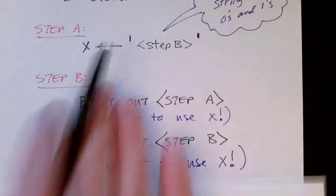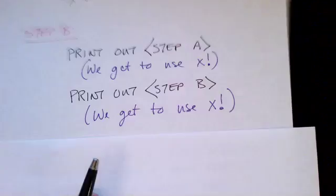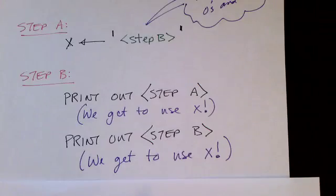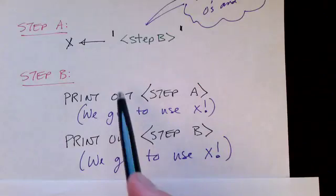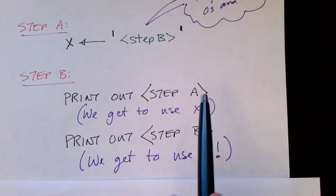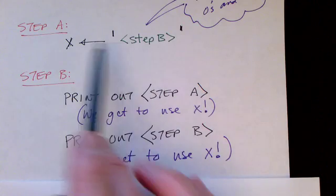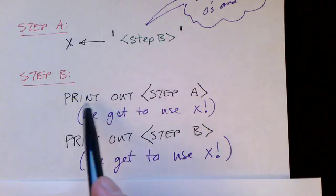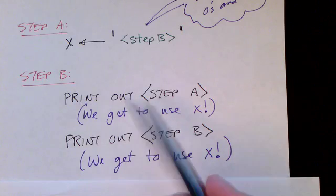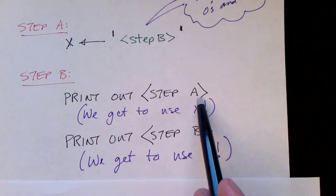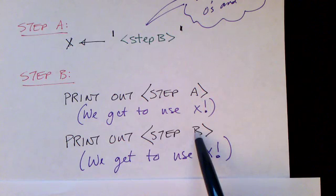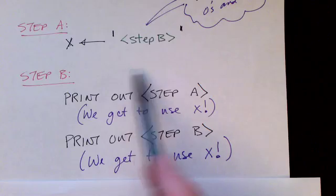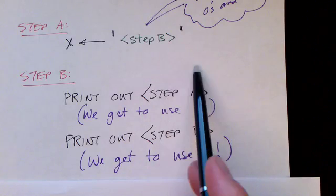What does step B do? The description of this Turing machine has effectively two parts: the first part is step A and the second part is step B. What step B is going to do is print out step A and then print out step B. So the description of the Turing machine is going to be broken into two pieces, and we need to print out the description of step A followed by the description of step B.